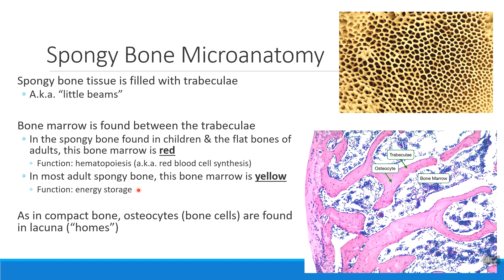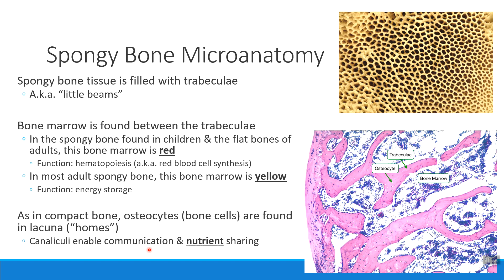Just like we saw in compact bone, the cells we find inside spongy bone tissue are still called osteocytes. We still find them inside their little homes called lacuna, and we still use canaliculi to allow sharing of nutrients and messages between bone cells. So as you study spongy bone and compact bone, pay attention to how they're different and how they are the same.